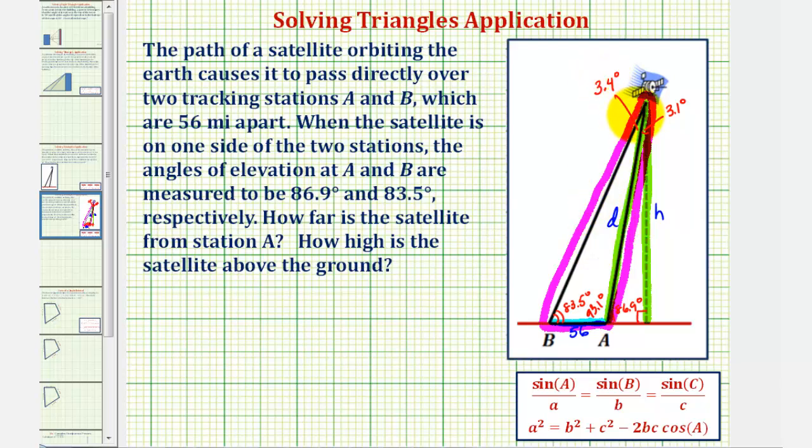Using the angle that's opposite the side of known length, we can say sine of 3.4 degrees divided by the length of the opposite side, which is 56 miles, must equal—we're trying to find the length of side D. Notice how the angle opposite side D would be this angle here, that measures 83.5 degrees, so we can say equals sine 83.5 degrees divided by D.